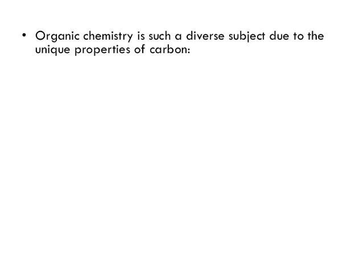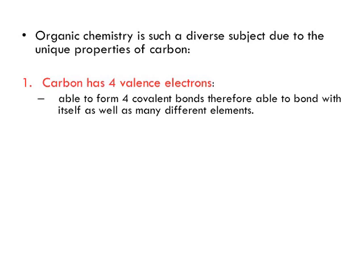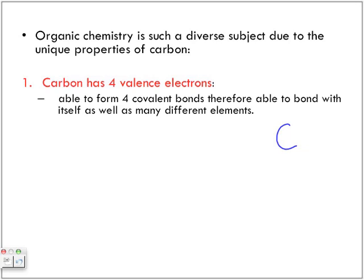Organic chemistry is such a diverse subject due to the unique properties of carbon. One of the most important factors that will help you with drawing these hydrocarbon compounds is the fact that carbon has four valence electrons. What it means is it has the ability to form four covalent bonds, either with other carbons or with other hydrogens. It's really important to be able to identify that carbon can form up to four bonds around it.